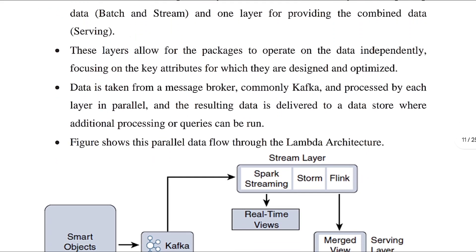Data is taken from a message broker, commonly Kafka. It will be processed by each layer in parallel — both the batch layer and the stream layer process the data in parallel, and the resulting data is delivered to a data store.